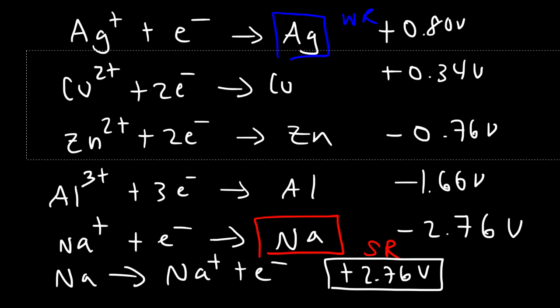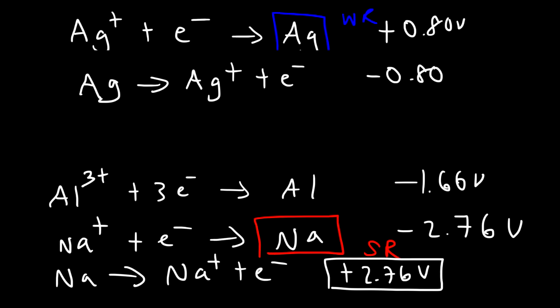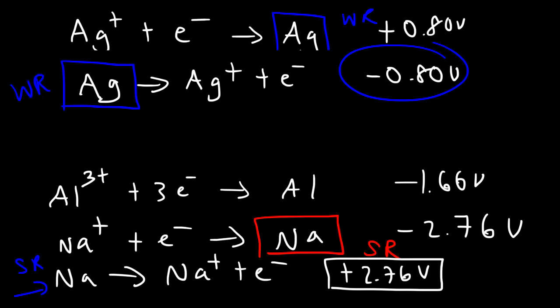If we reverse the silver reaction, Ag really doesn't have a desire to give away an electron, so the cell potential is negative, meaning it's non-spontaneous. Ag is not going to give up that electron unless something takes it by force, making it a very weak reducing agent. Sodium, on the other hand, really wants to give away its electron, which is why it's a strong reducing agent.